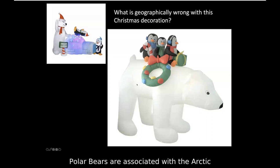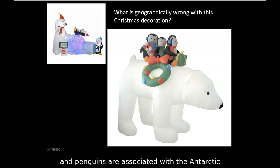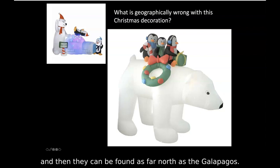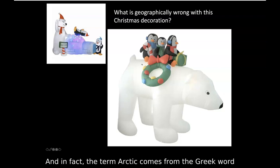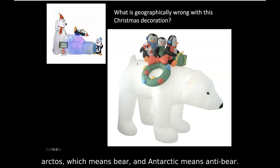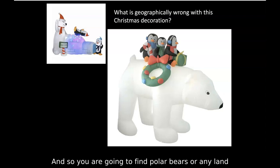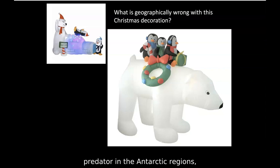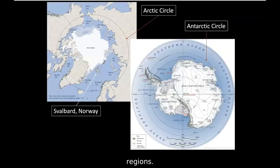Polar bears are associated with the Arctic and penguins are associated with the Antarctic — and penguins can be found as far north as the Galápagos. In fact, the term 'Arctic' comes from the Greek word 'Arktos,' which means bear, and 'Antarctic' means anti-bear. So you are not going to find polar bears or any land predator in the Antarctic regions, whereas there are lots of land predators in the Arctic.